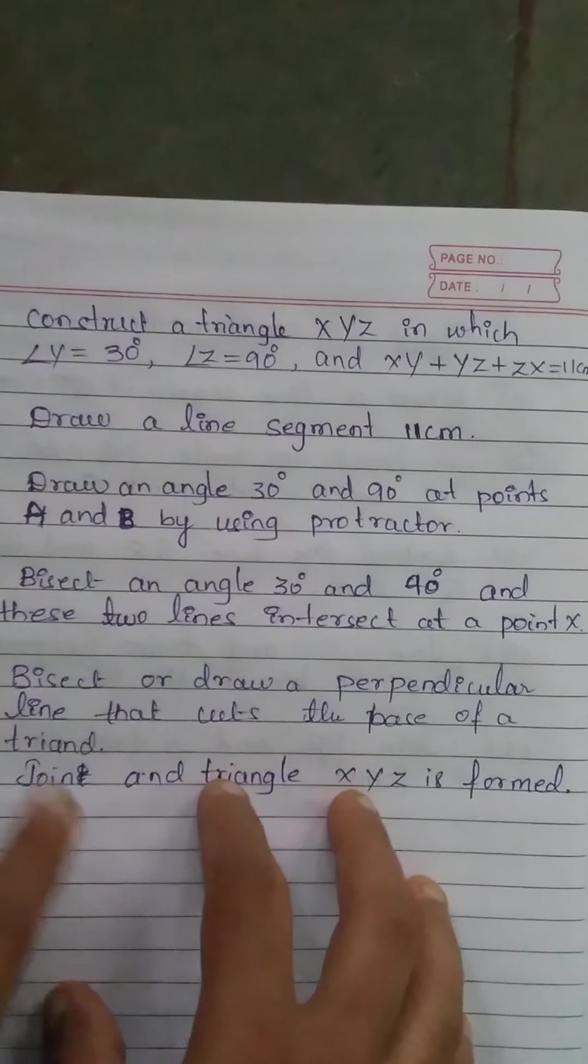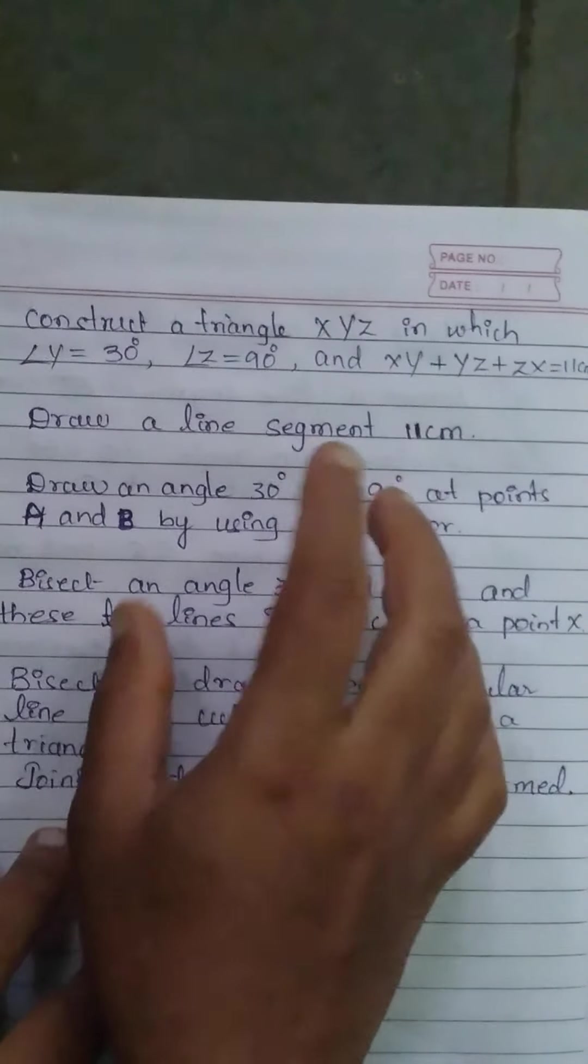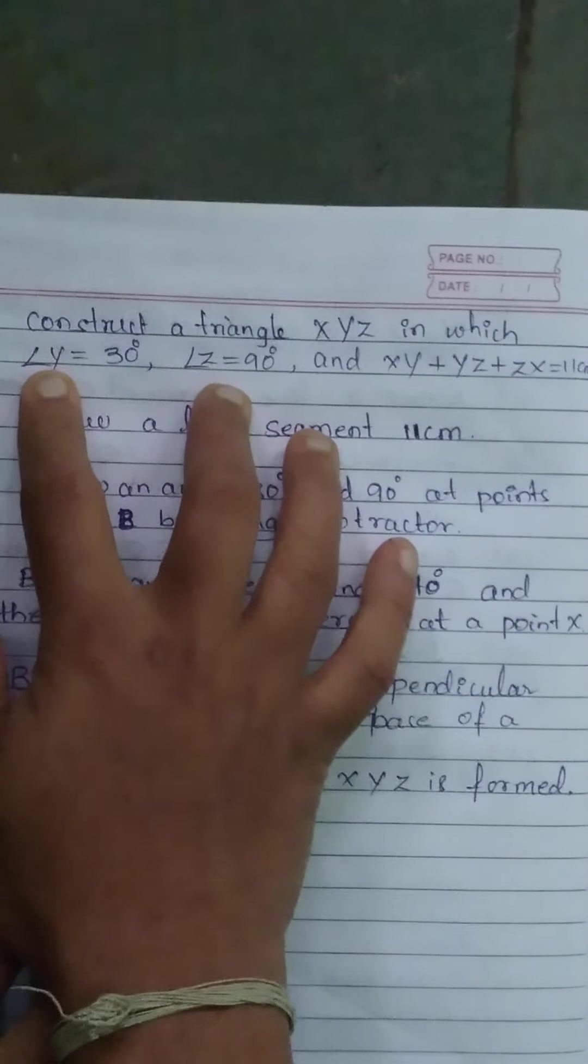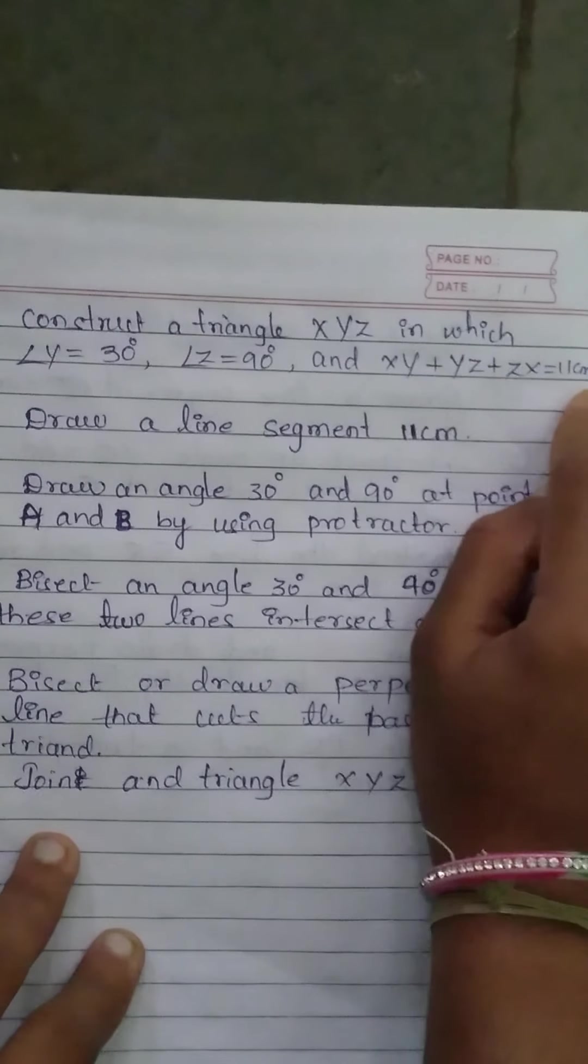Good afternoon students. Today we study about construction of a triangle XYZ. They given two angles and the sum of three sides is equal to 11 cm.